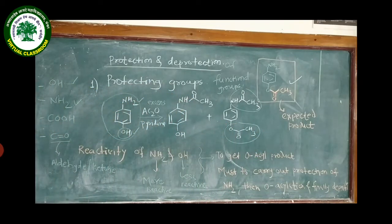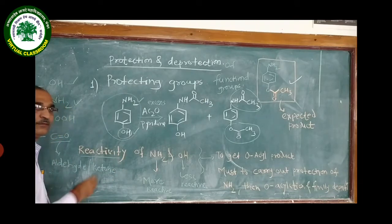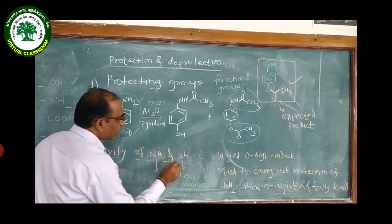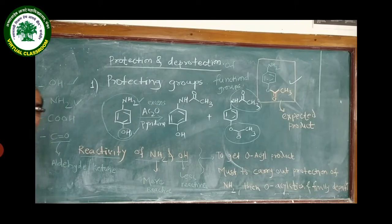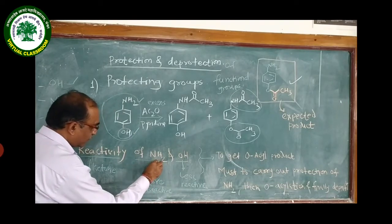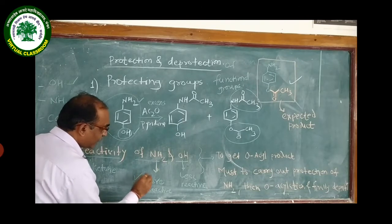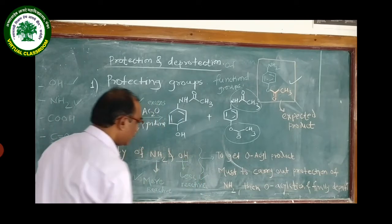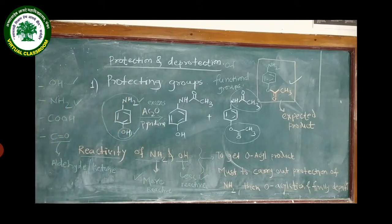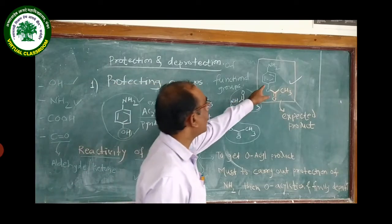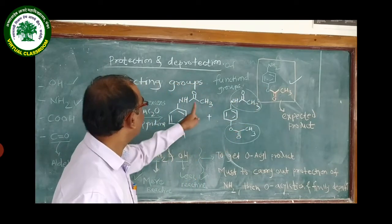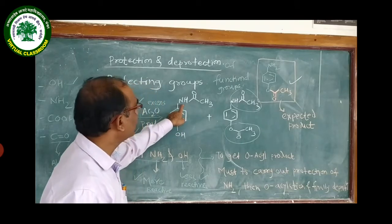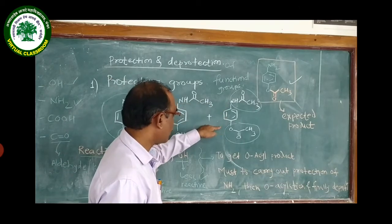Because the reactivity of NH2 is greater than OH, instead of getting our desired O-acetylated product, we get either the N-acetylated product or the diacetylated product when excess reagent is used.